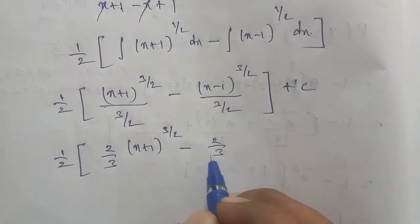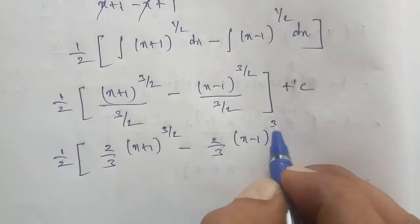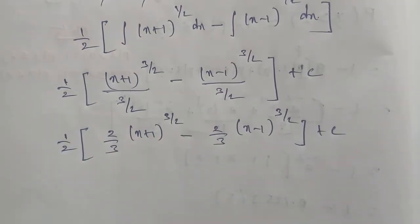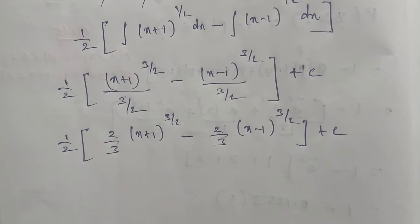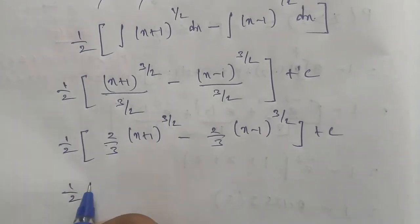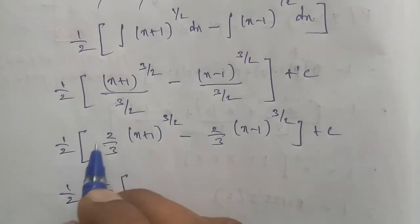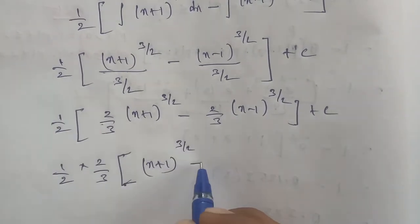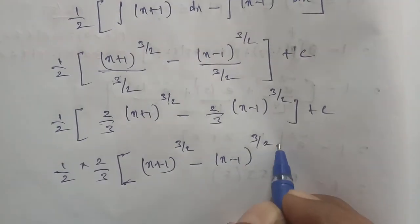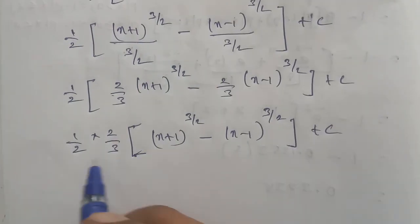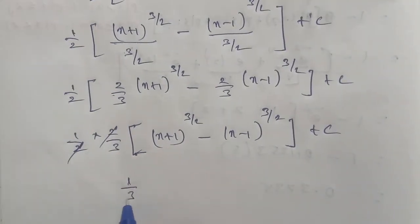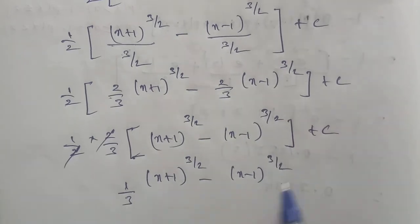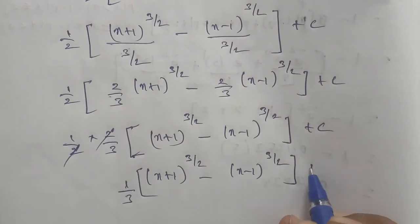So we get 1 by 2 times 2 by 3 into X plus 1 whole power of 3 by 2, minus 2 by 3 into X minus 1 whole power of 3 by 2, plus C. The 2 in the numerator and denominator cancel, so the final answer is 1 by 3 of X plus 1 whole power of 3 by 2 minus X minus 1 whole power of 3 by 2, plus C. Thank you.